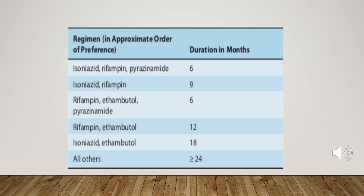Sometimes treatment lasts more than 24 months — over two years. It's not a one-week or two-week course of antibiotics; we are talking about months. You have to use combinations and treat for a long period of time.